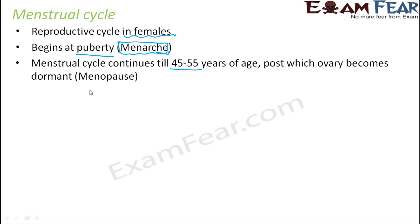When the menstrual cycle stops, the ovary no longer produces eggs, so reproduction cannot take place. Similarly, before the menstrual cycle starts, the primary oocytes are in an arrested phase and eggs cannot form. Female gametes are produced only between menarche and menopause — menopause being the name given to the last menstrual cycle after which no further cycle occurs.